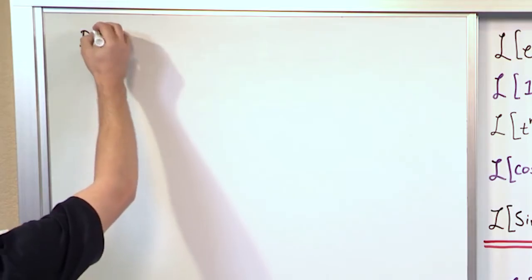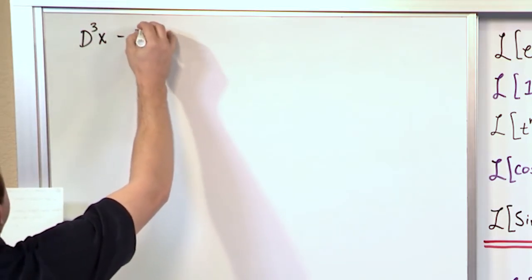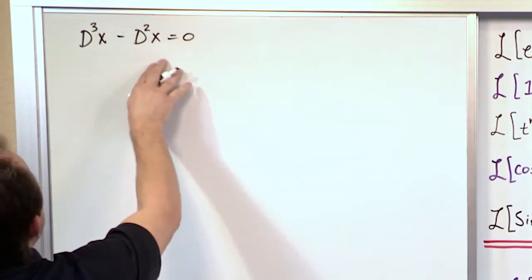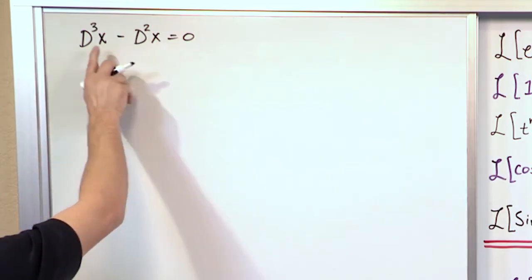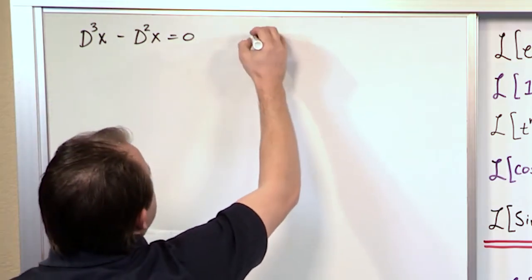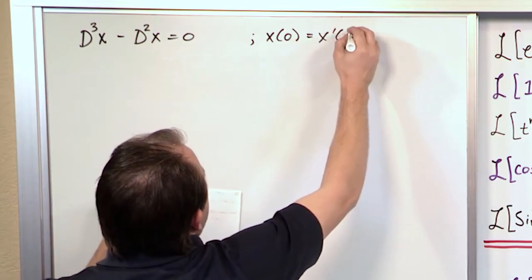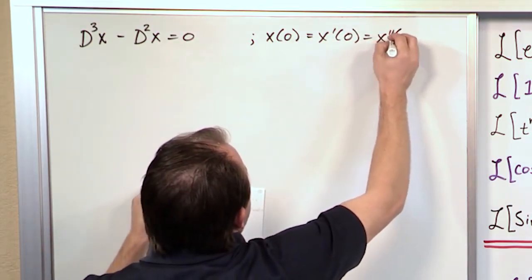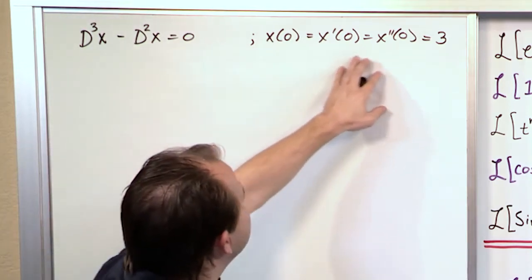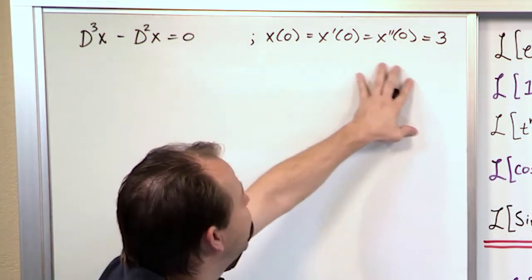So let's say we have the problem: the third derivative of x minus the second derivative of x is equal to 0. That's a typical differential equation in operator notation — it's the third derivative of x(t) minus the second derivative of x(t) is equal to 0. The initial conditions given are x(0) = x'(0) = x''(0) = 3. So basically at time 0, the function is equal to 3, its first derivative is equal to 3, and its second derivative is equal to 3.